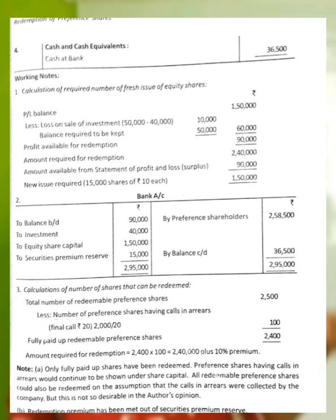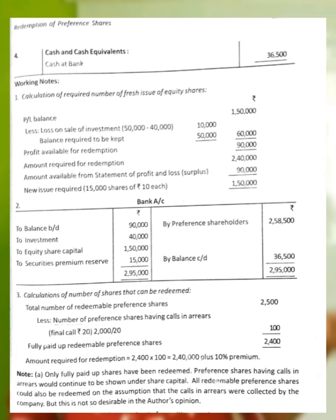Amount required for redemption: We need to redeem Rs.2,40,000 (Working Note 3). Profit available for redemption is Rs.90,000, already calculated. So the remaining amount must come partly from profit and partly from a fresh issue of equity shares. Amount to be raised through fresh issue = Rs.2,40,000 minus Rs.90,000 = Rs.1,50,000.